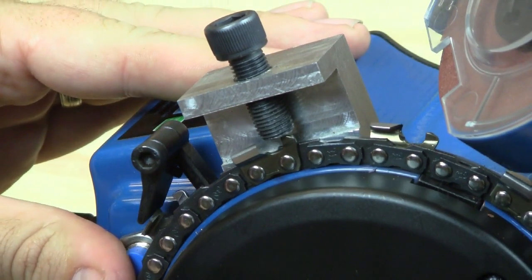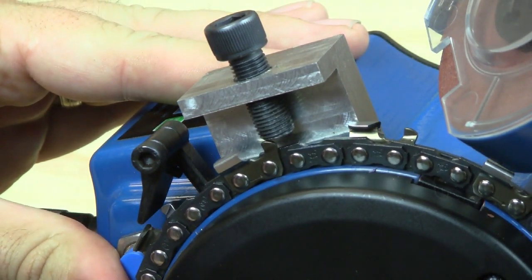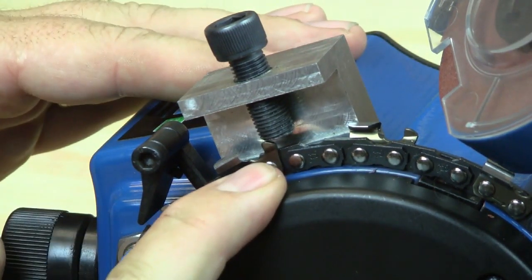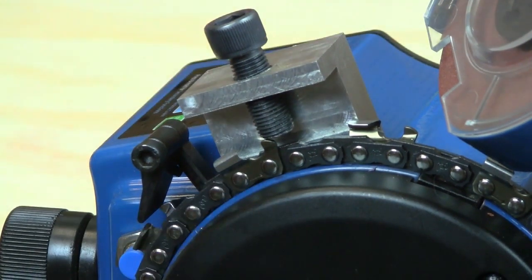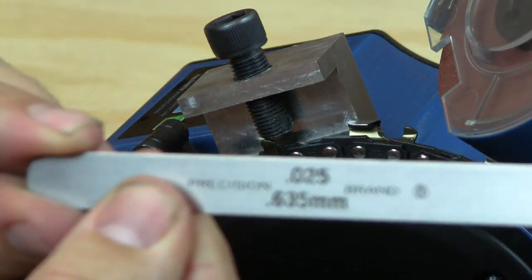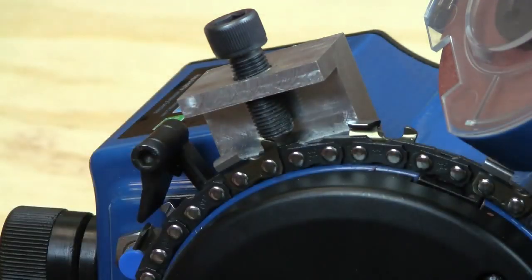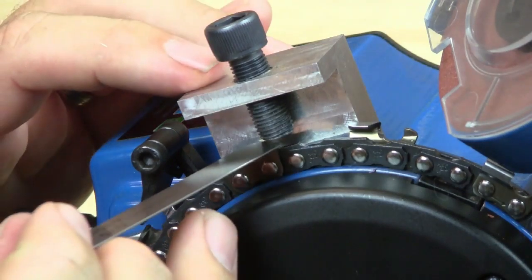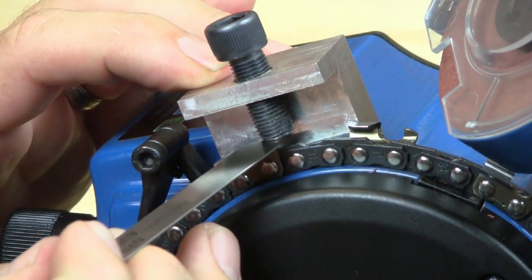Next, rock the cutter back so that the depth gauge is now lined up under that same edge of the screw where we just had the cutter head. Using the included .025 inch feeler gauge, try and insert it between the screw and the depth gauge.